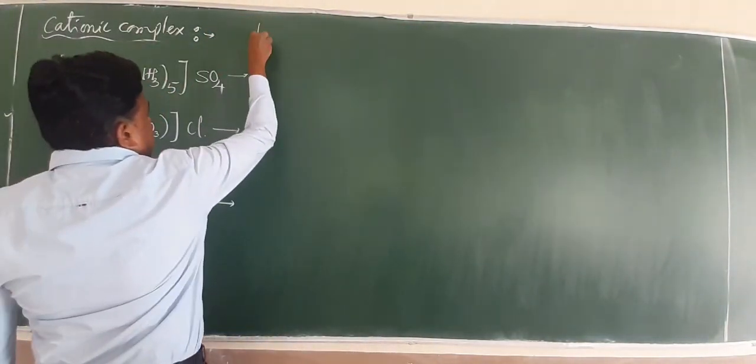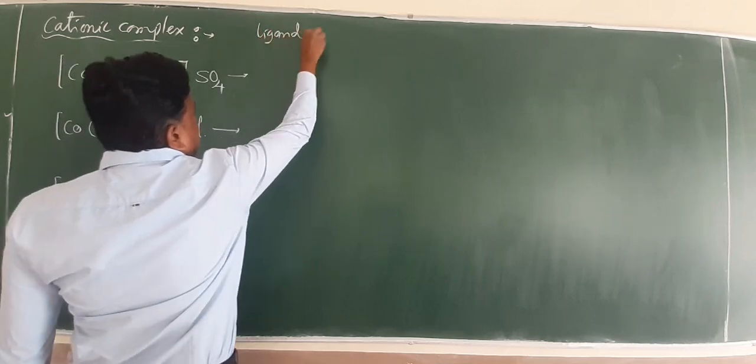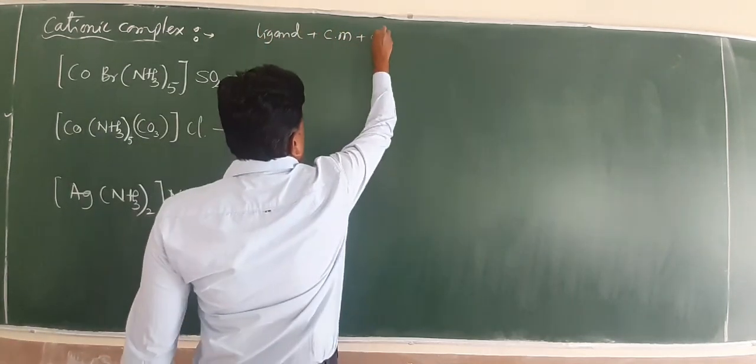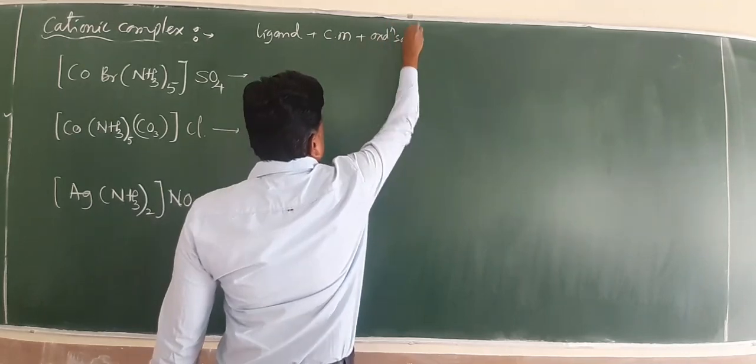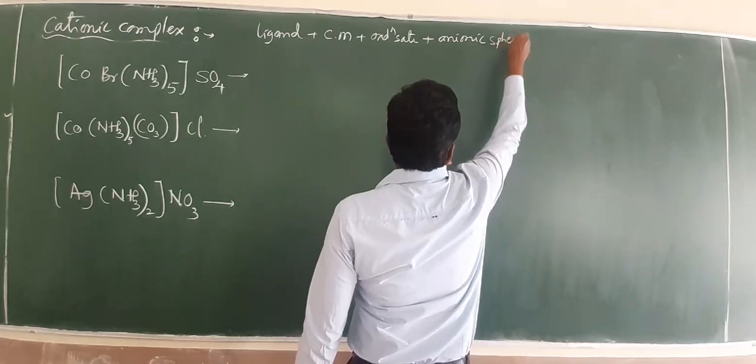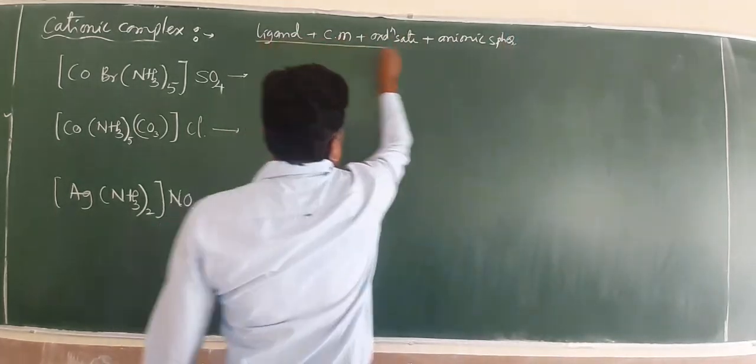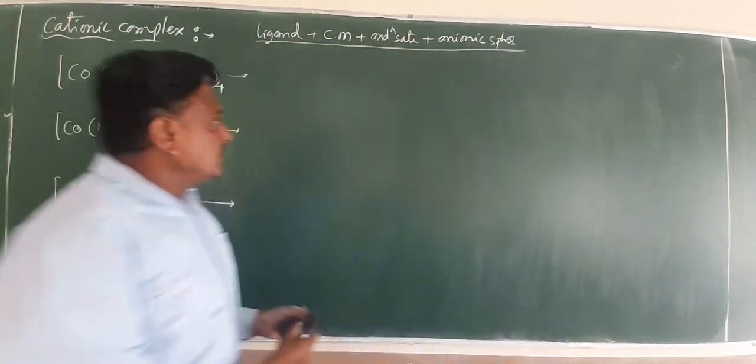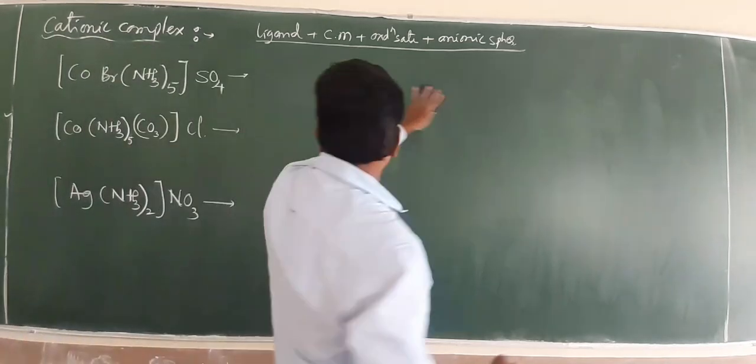In cationic complex, we start with the name ligand, central metal, oxidation state and anionic sphere. And this is the major part to follow for the nomenclature of your cationics.